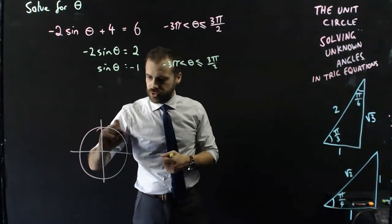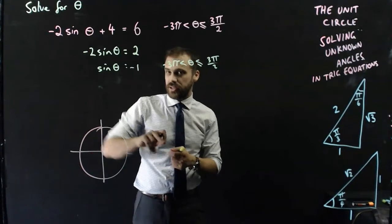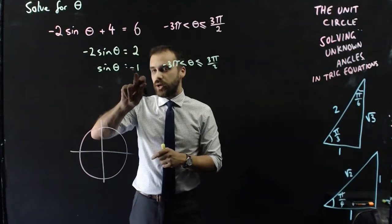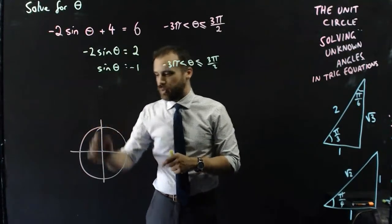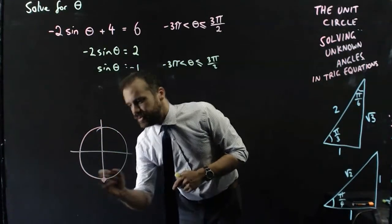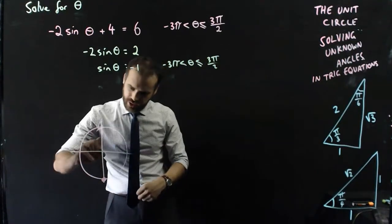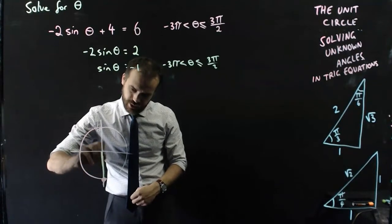Now remember, this is our dot, cos theta, sine theta. Sine theta is the y-coordinate of our dot, so the way that we get a y-coordinate of negative 1 is to put our dot down here.